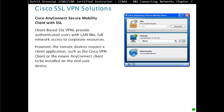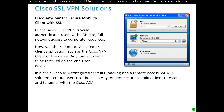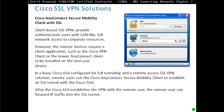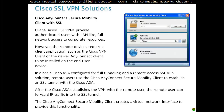With Cisco AnyConnect, we can't just open the web browser to start accessing the SSL VPN — we have to have an application or software installed. In a basic Cisco ASA configured for full tunneling and remote access SSL VPN, remote users use the Cisco AnyConnect Secure Mobility Client to establish an SSL tunnel with the Cisco ASA. After the tunnel is established, the remote users can forward IP traffic into the SSL tunnel.